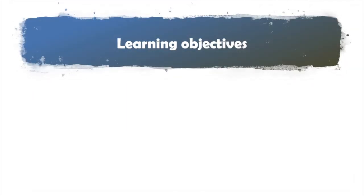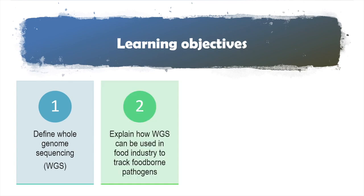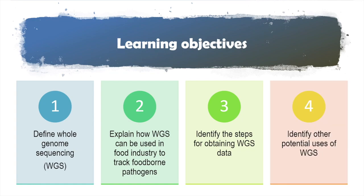The objectives of this module are to: 1. Define whole genome sequencing, 2. Explain how whole genome sequencing can be used in food industry to track foodborne pathogens, 3. Identify the steps for obtaining whole genome sequencing data, and 4. Identify other potential uses of whole genome sequencing.